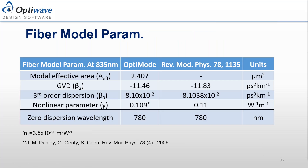As a final touch, we're going to compare the extracted results with those from the Dudley et al. paper. While the modal effective area wasn't reported by the reference, we do see that beta 2, beta 3, and the nonlinear parameter are all in excellent agreement, not to mention the exact match with the zero dispersion wavelength. These parameters can now be taken and used within fiber models in the OptiSystem product to simulate the behavior of the fiber within the larger system.